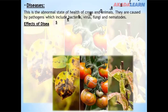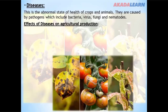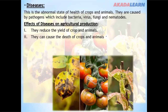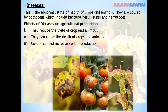The effects of diseases on agricultural production: they reduce the yield of crops and animals; they can cause the death of crops and animals; the cost of control increases the cost of production; and they reduce farmers' income.